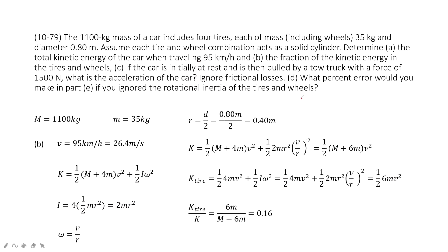The second one asks you the fraction of kinetic energy in tires and wheels. So this is defined as a ratio between each other. The velocity is still 95 km per hour converted to meter per second. The total is what we just did in the previous question, one half M plus 6m v squared, from problem A.